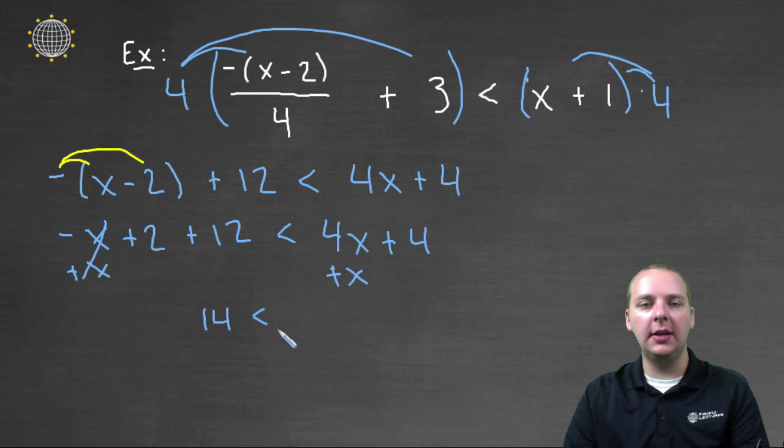And you get fourteen is less than five x plus four, because we added x to the right hand side as well. We'll subtract four over to the left hand side, and we get ten is strictly less than five x.